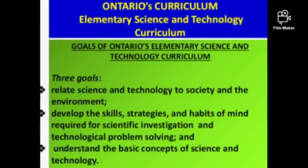Ontario's elementary science and technology curriculum has three goals: first, relate science and technology to society and the environment; second, develop the skills, strategies, and habits of mind required for scientific investigation and technological problem solving; third, understand the basic concepts of science and technology. These interrelated goals show that learning in science and technology is not merely learning facts — students learn in age-appropriate ways to understand and critically consider the impact of developments in science and technology on modern society and the environment.